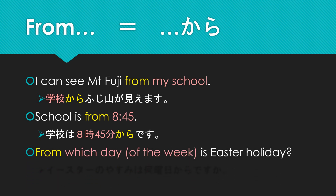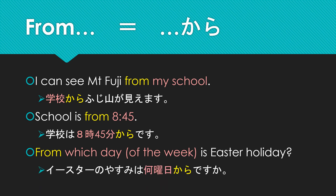How about this one: 'From what day of the week is Easter holiday?' You wouldn't know 'holiday' yet, but Easter no yasumi is Easter holiday — yasumi means holiday, which is one of the key words you'll learn this unit. In Japanese: Easter no yasumi wa nanyoubi kara desu ka? So, 'from' is kara. As long as you remember that kara goes after the actual word, you'll be fine.